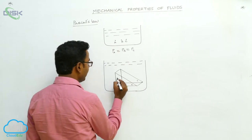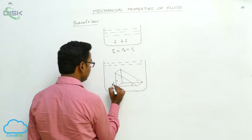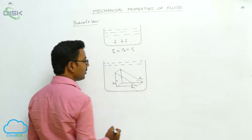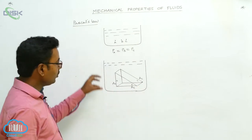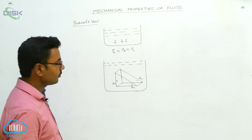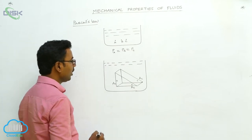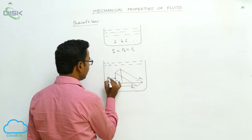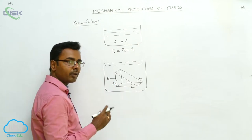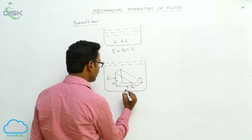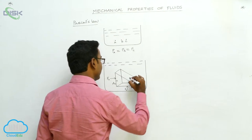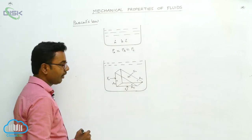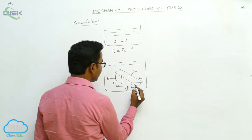Now A, B, and C are the three faces. The area of face A is A_A, area of face B is A_B, and area of face C is A_C. This is a part of the fluid inside the fluid. On each face there will be forces. On face A, force acting is F_A, perpendicular to the surface. On face B, force is F_B, perpendicular to the face. On face C, force is F_C, also perpendicular to the face. The angles are theta 1 and theta 2.